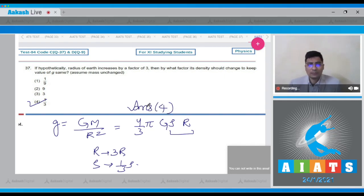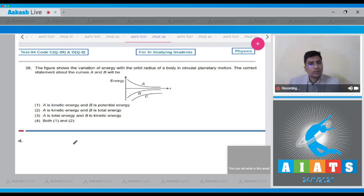Now moving on to question number 38. The kinetic energy in this case is given as g small m capital M by 2r. Potential energy is given as minus g m M by r, and the net mechanical energy is given as minus g small m capital M by 2r.